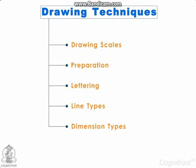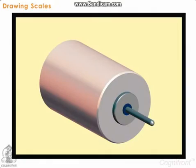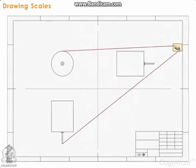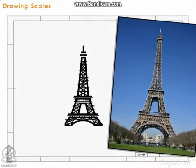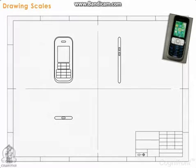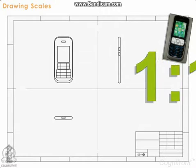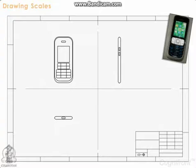Let's start with drawing scales. Drawing scales allow us to draw any object to the required size on the paper. For small objects, for example a mobile phone, the drawing of the prototype can be drawn to the same size as the original — that is one to one on the drawing paper. Such drawings are known as full size drawings.